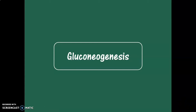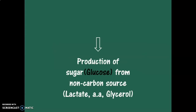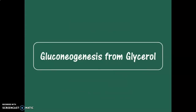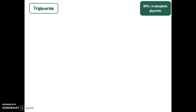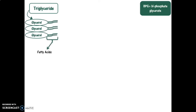Today I will talk about gluconeogenesis from glycerol, a non-carbohydrate source. Triglyceride is a molecule that contains free fatty acids with glycerol. When we want to produce glucose from a non-carbohydrate source such as lactate, amino acid, or glycerol, in the case of triglyceride, we cut this molecule into a free fatty acid and a glycerol part. The free fatty acid will enter another pathway, and the released glycerol will enter gluconeogenesis.